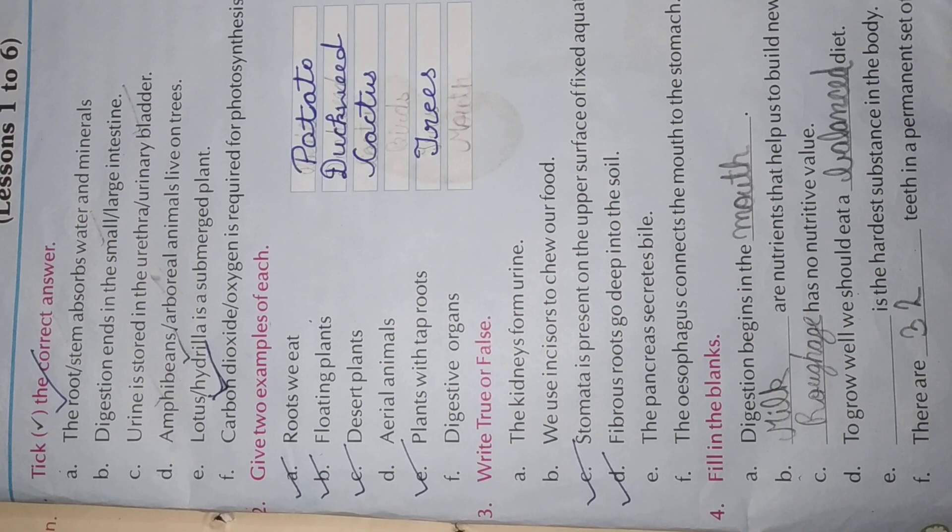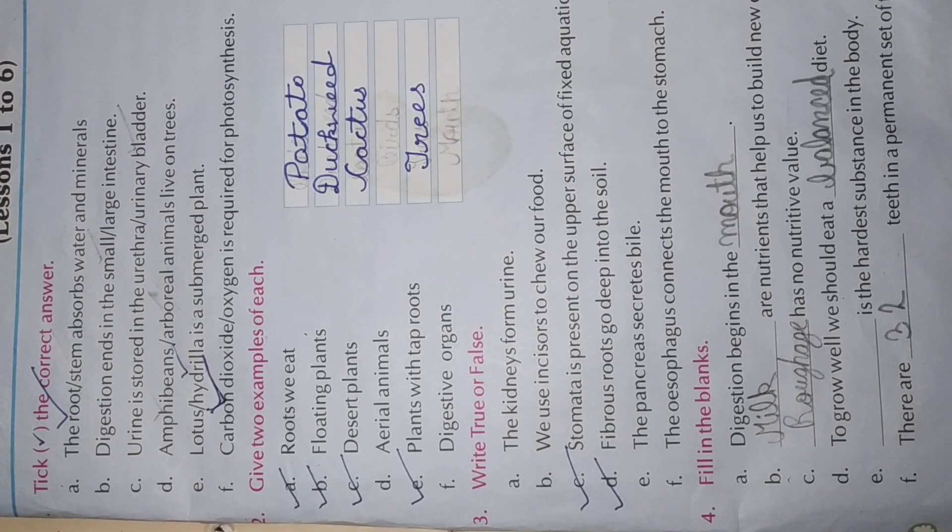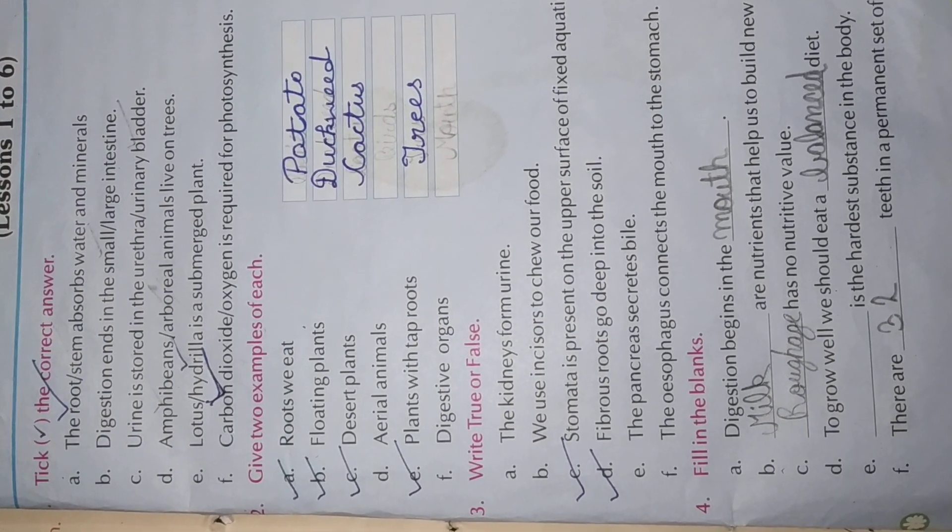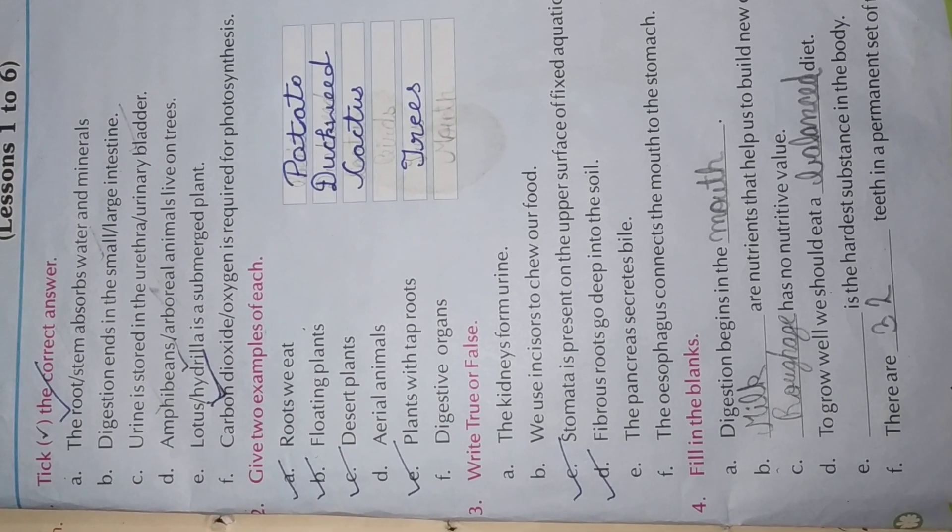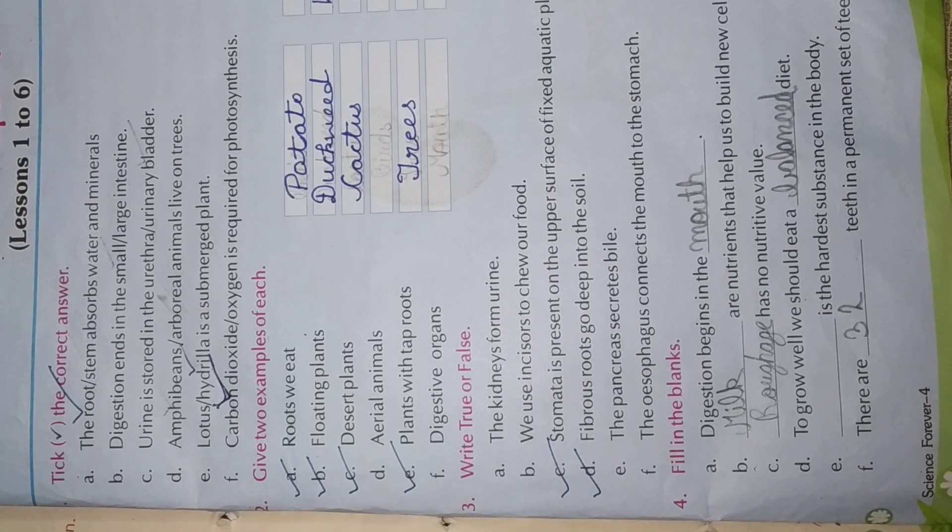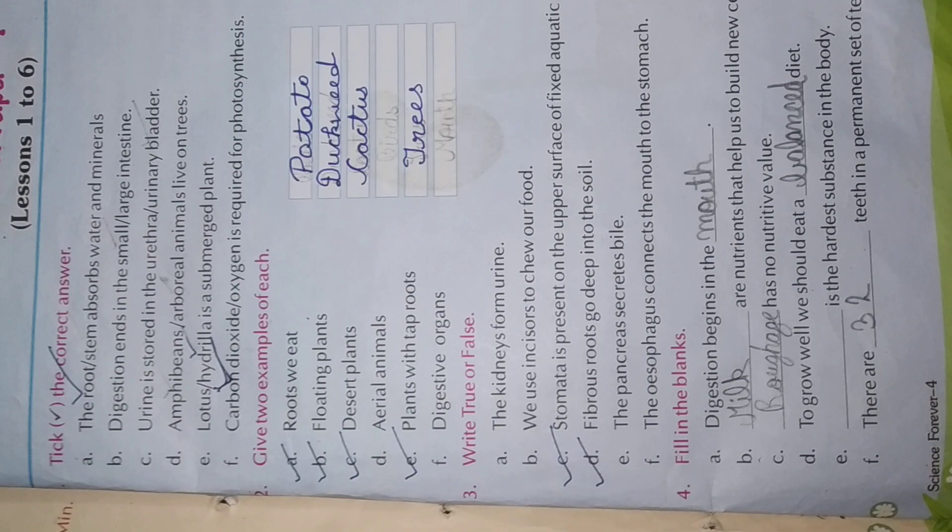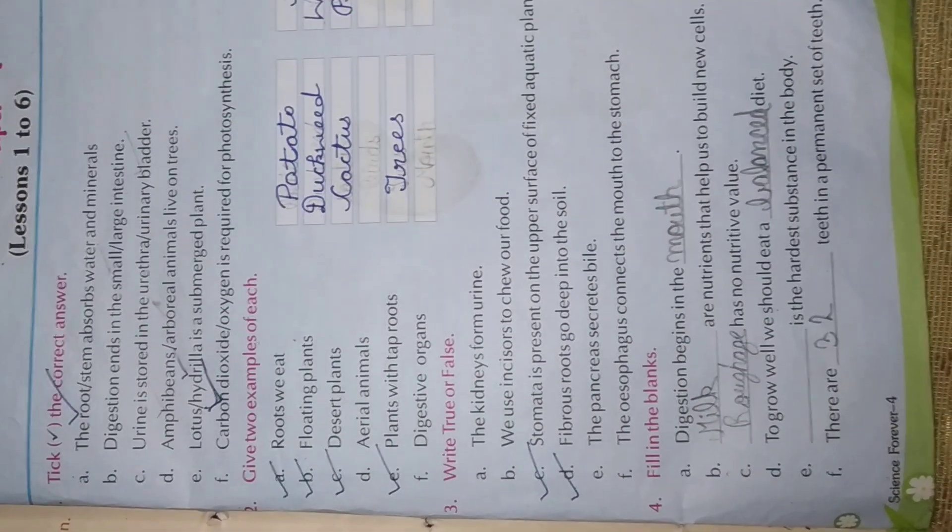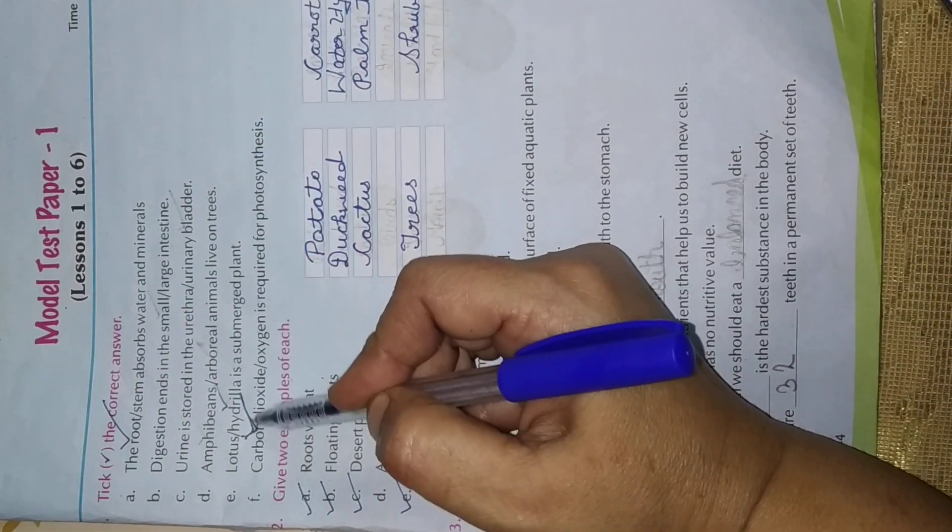Part B. Lotus or Hydrilla is a submerged plant. Which is a submerged plant? Hydrilla. Tick hydrilla. F. Carbon dioxide or oxygen is required for photosynthesis. What is required for photosynthesis? Carbon dioxide. Tick carbon dioxide.